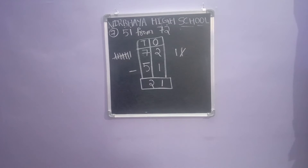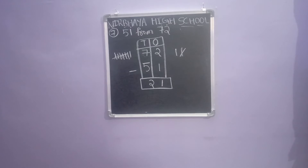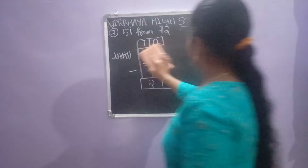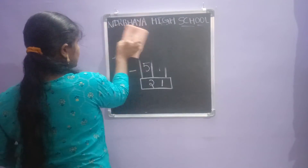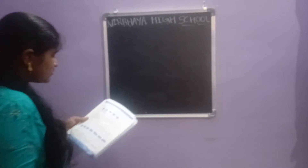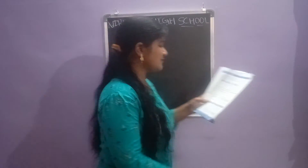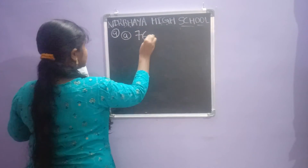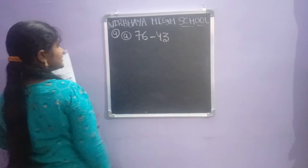Do you understand children? This is the vertical column method. Next one — I am using vertical subtraction. Vertical subtraction means writing the numbers one below the other. Seventy-six minus forty-three.